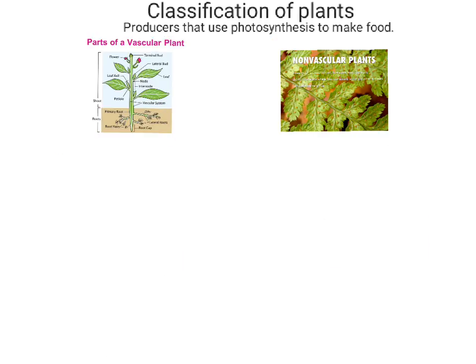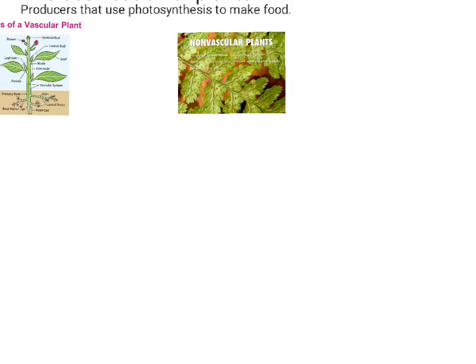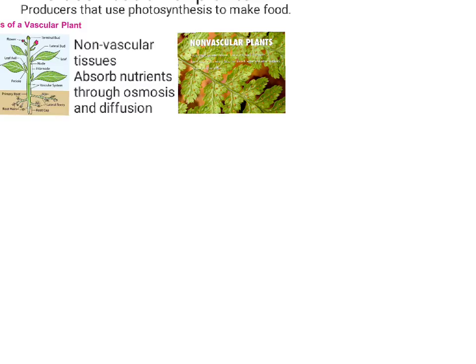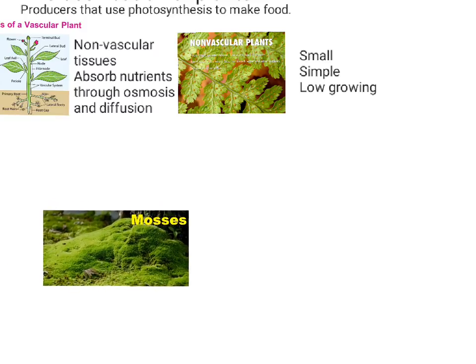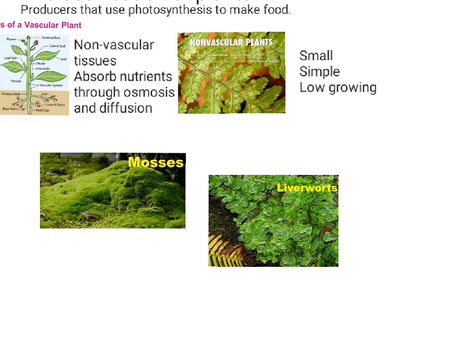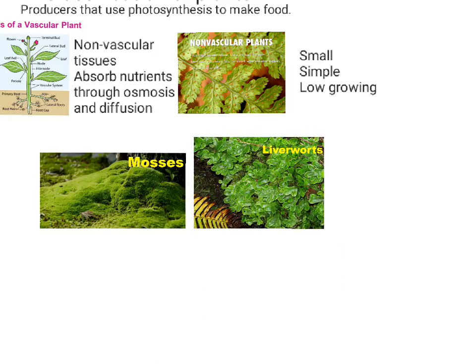So we're going to be looking at non-vascular plants first. Another word for this would be the term bryophytes. Non-vascular plants have non-vascular tissues, therefore they cannot transport water and nutrients around in the plant — they get their nutrients through the process of diffusion and osmosis. As a result, the plants that are usually developed are small, simple, and low-growing. Some specific examples include mosses, liverworts, and hornworts.